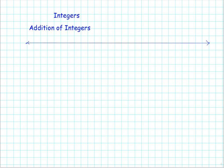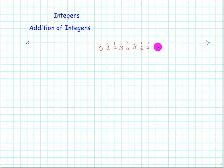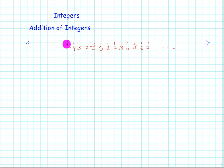Here we have a number line. We have a reference point of 0, then numbers 1, 2, 3, 4, 5, 6, 7 and so on. And going backward from 0, we already learned that we have negative numbers: minus 1, minus 2, minus 3, minus 4, minus 5 and so on.